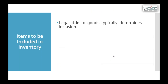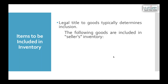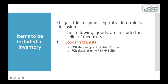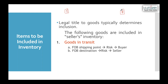When purchasing inventory, ownership transfers from the supplier to the buyer depending on the purchase terms. When goods are in transit, it is important to know who owns them. These terms are called International Commercial Terms, or Incoterms, issued by the International Chamber of Commerce.